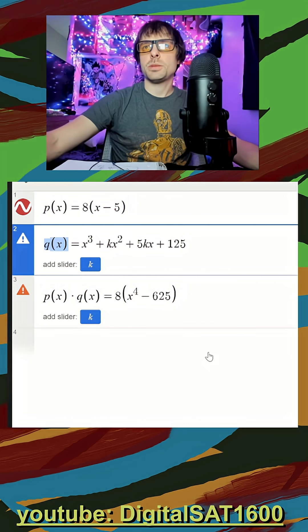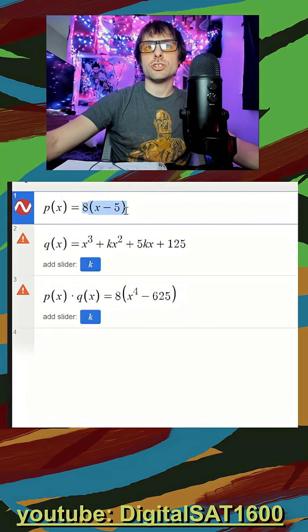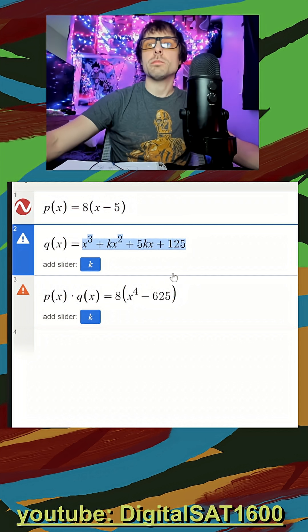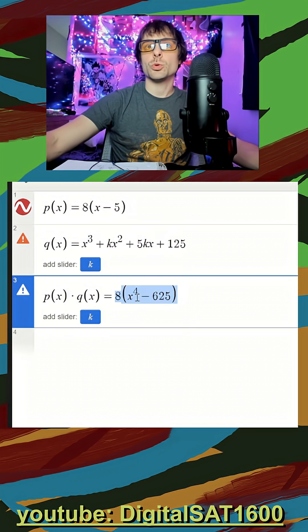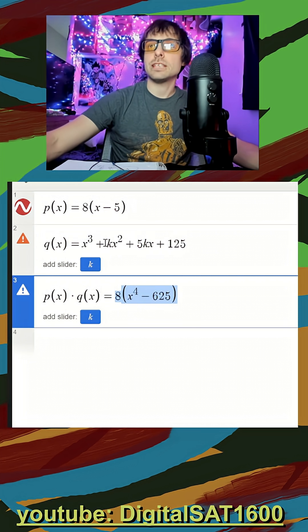So there's going to be an easiest possible way to solve this, and that is, well, if I just take this equation and I multiply it by this equation, we can make a regression to make it equal to this equation, and it should automatically give me my k value.